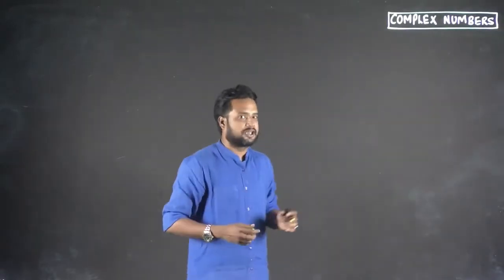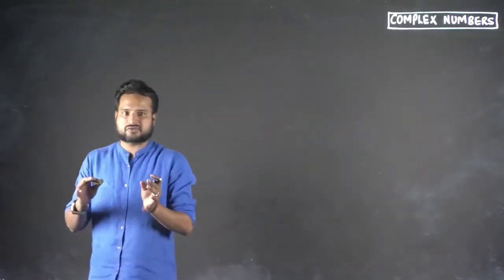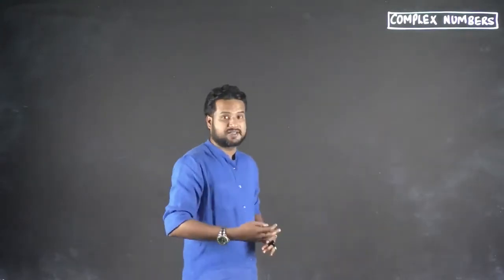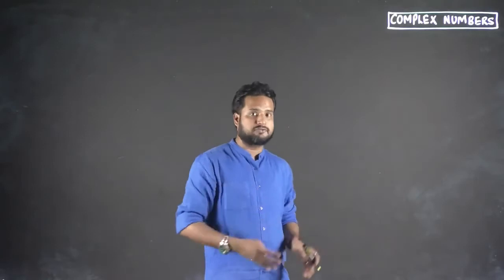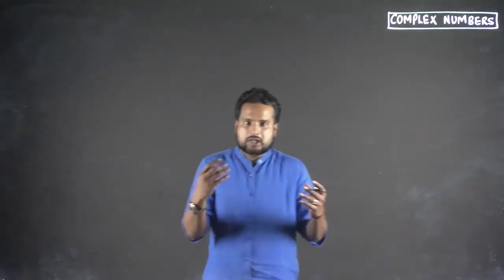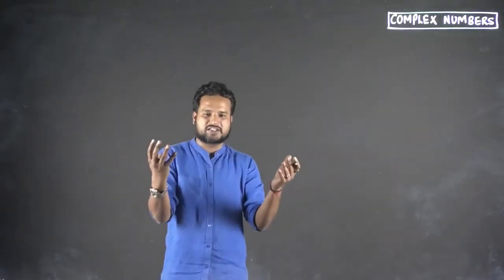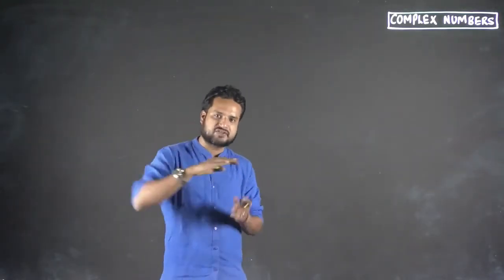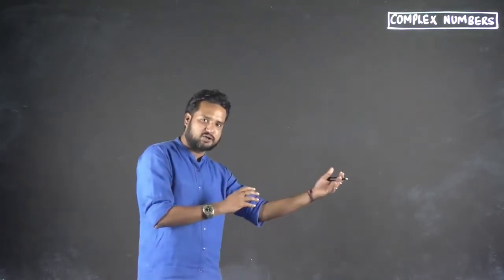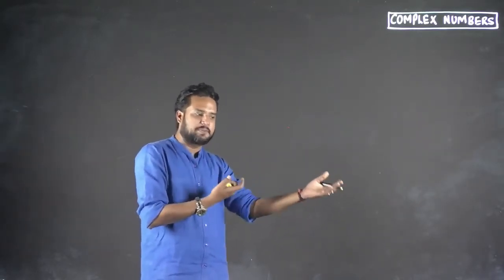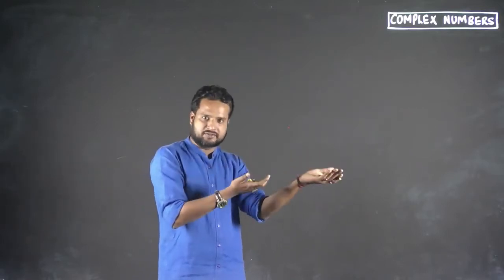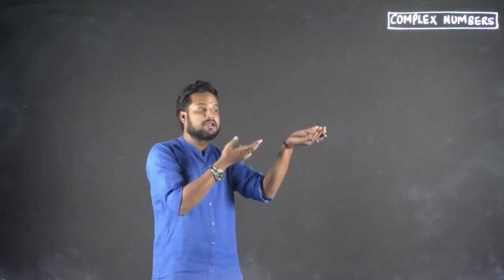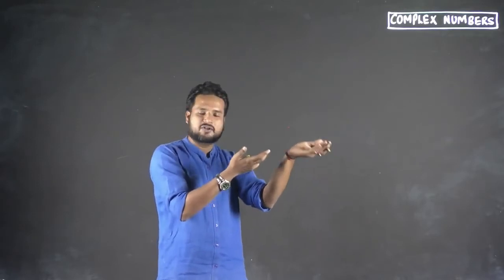If you remember complex numbers from 11th standard, you started from scratch with the basics — what is a complex number, what is modulus and argument. In this video we are going to discuss only that. A complex number is nothing but a parent of a number system. 1, 2, 3 are natural numbers. Include 0 and it becomes a whole number. Include fractions and negative numbers and everything, it becomes real number. Above that we have complex numbers.